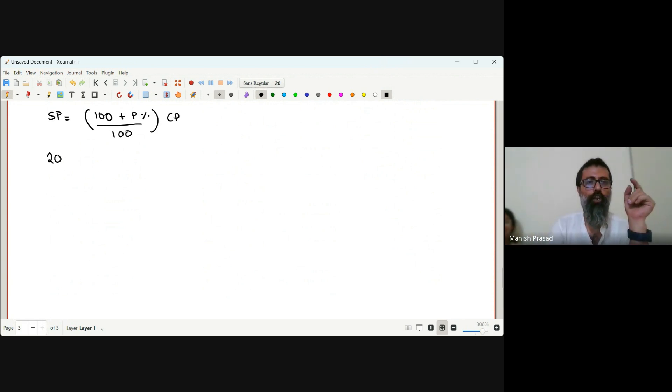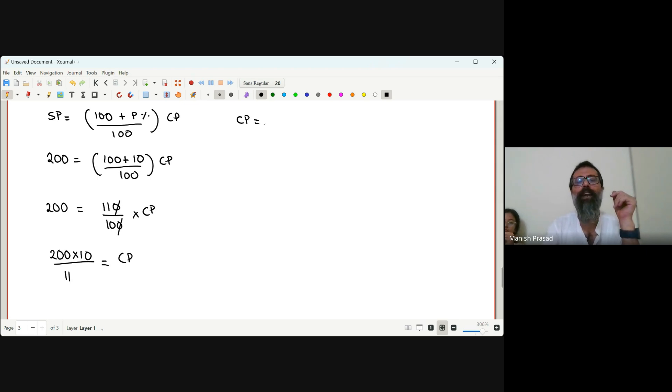Profit is given as 10%. We do not know the CP. So 200 - I find this easier if we know the formula. What happens? 10 comes this side multiply by 2, 11 comes this side divided. So CP becomes so easy, it becomes 2000 over 11.